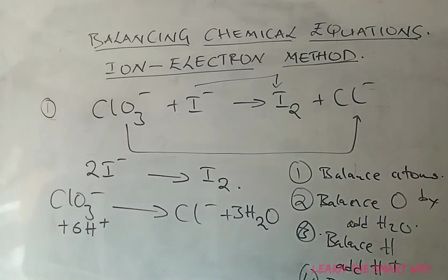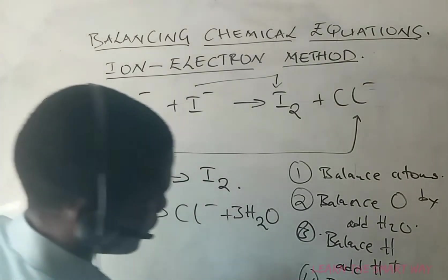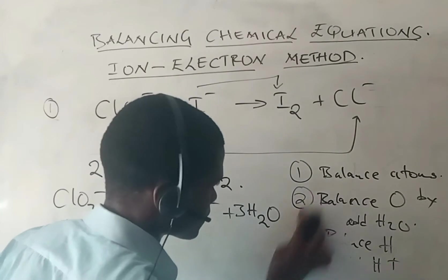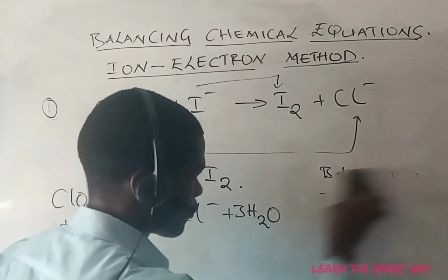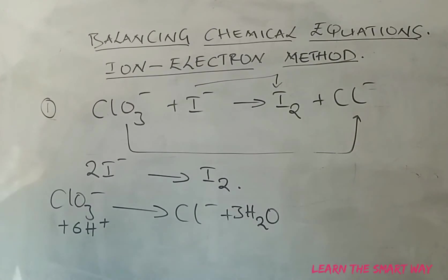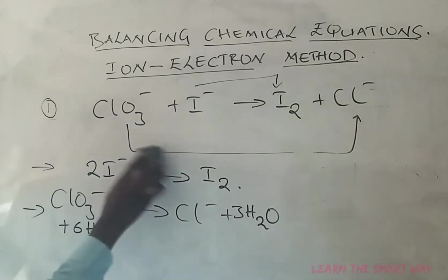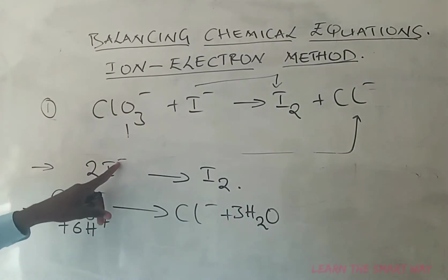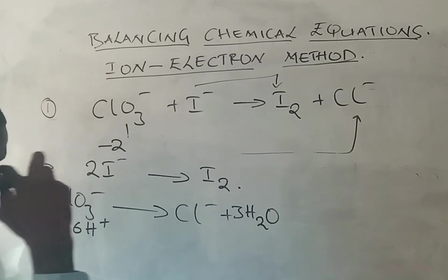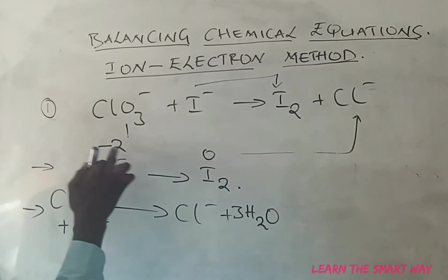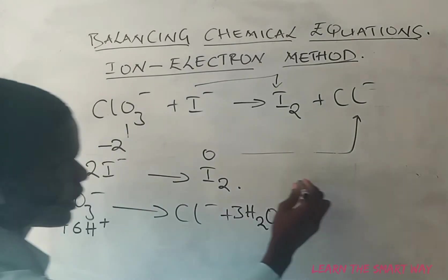We've balanced atoms, oxygen, and hydrogen, so we now move to balancing the charges. In the first half-reaction, the charge is negative two on the left and zero on the right — moving from negative two to zero is an increase, so we classify this as an oxidation reaction.